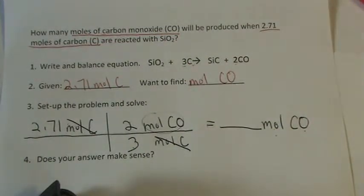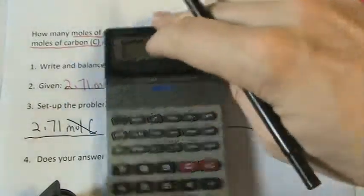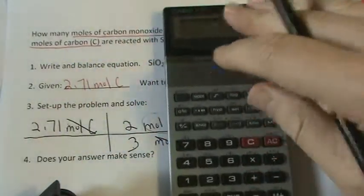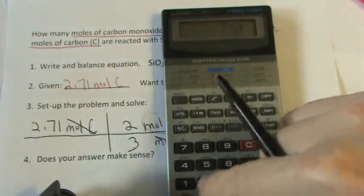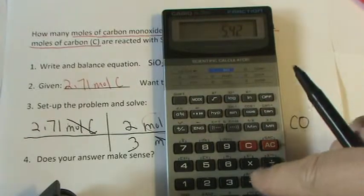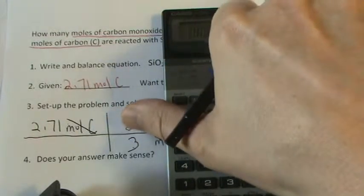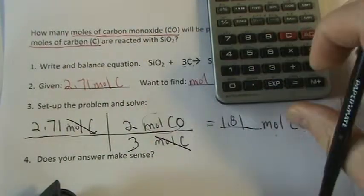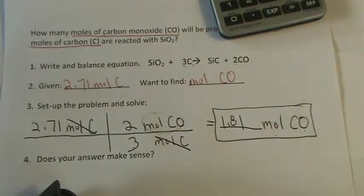And the way I do the math on this one is I multiply the top. So what do we get? 2.71 times 2 divided by 3 equals 1.806. So let's say 1.81 moles of carbon monoxide. And that's my final answer.